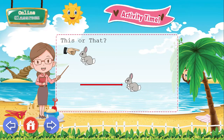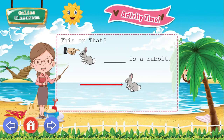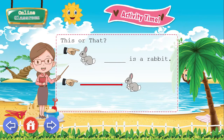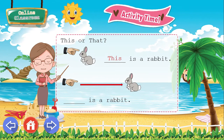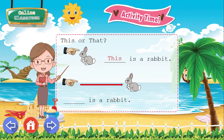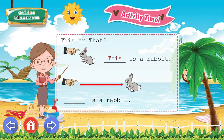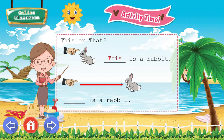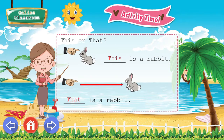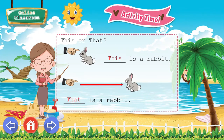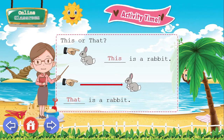Number one, what will be your answer? The answer for number one is 'This' — very good. This is a rabbit, because you're pointing at an animal which is close to you. And number two, the answer will be 'That', because you're pointing at an animal which is further from you. That is a rabbit.